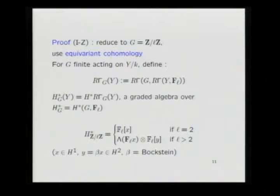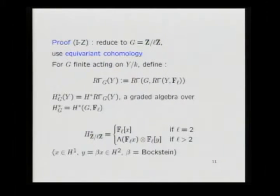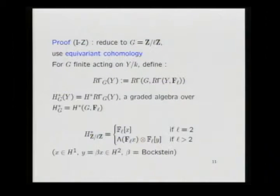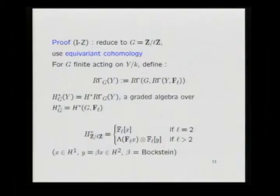For G the cyclic group Z/LZ, the cohomology is known. For L equal to 2 you get a polynomial algebra on one generator in degree 1 — actually dual numbers — times a polynomial algebra on a generator y in degree 2, where y is defined as the Bockstein of x, via the Bockstein sequence Z/LZ → Z/L²Z → Z/LZ. So H^1 maps to H^2.